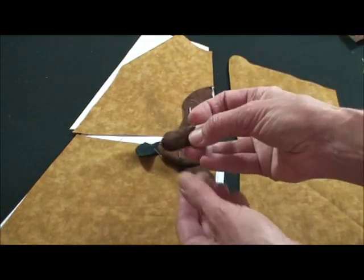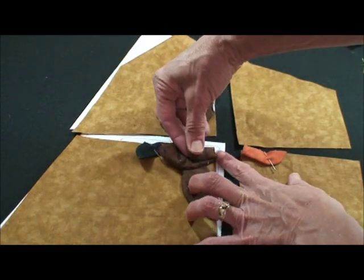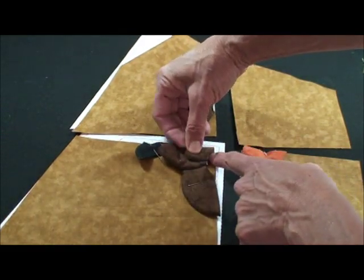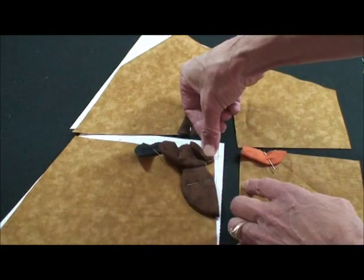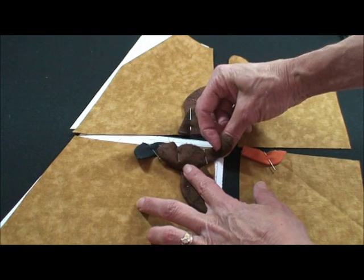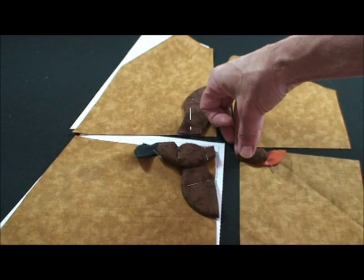Then we're going to place the head so that it aligns with the body, and it will go this way across the body. So when we sew these two sections together, the little head will flip back over the beak, covering part of the beak.